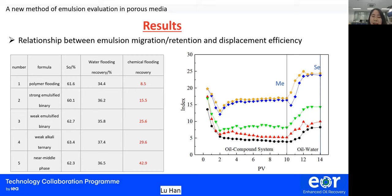At the same time, we also carried out conventional long-core flooding experiments as a comparative test. The recovery rate of polymer flooding is only 8.5%. The recovery rate of the strong emulsification binary system is 15.5%. The recovery rate of the weak emulsification binary system is 25.6%. The recovery rate of the weak alkaline ternary system can reach 29.6%, and the recovery rate of the near-middle-phase system can reach 42.9%.